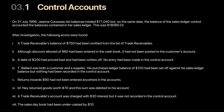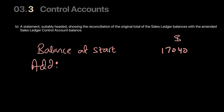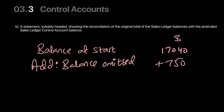Error 1: A trade receivables balance of 750 has been omitted from the list of trade receivables. This has been omitted from the list — which is composed of individual accounts — so this is Case 2. It only impacts our list of balances, not the control account. We add the omitted balance back: add 750 to the list, increasing trade receivables there only.